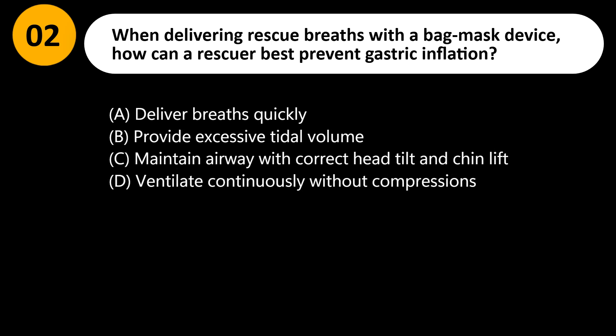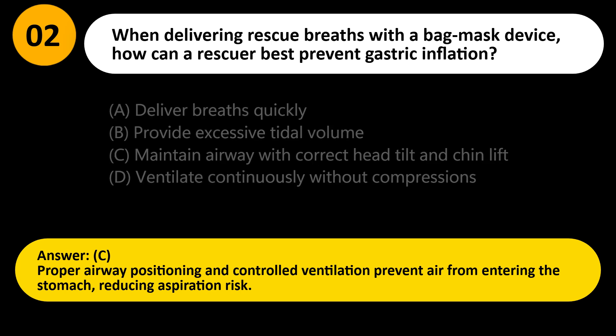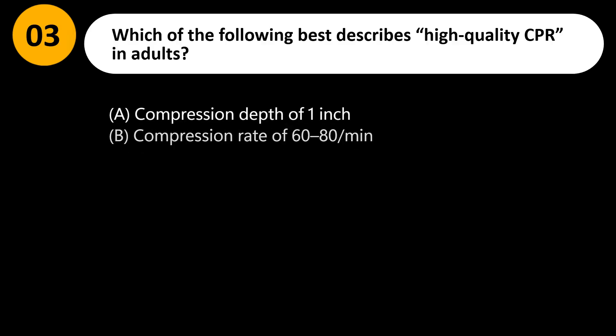When delivering rescue breaths with a bag-mask device, how can a rescuer best prevent gastric inflation? A) Deliver breaths quickly, B) Provide excessive tidal volume, C) Maintain airway with correct head tilt and chin lift, D) Ventilate continuously without compressions. Answer: C. Proper airway positioning and controlled ventilation prevent air from entering the stomach, reducing aspiration risk.